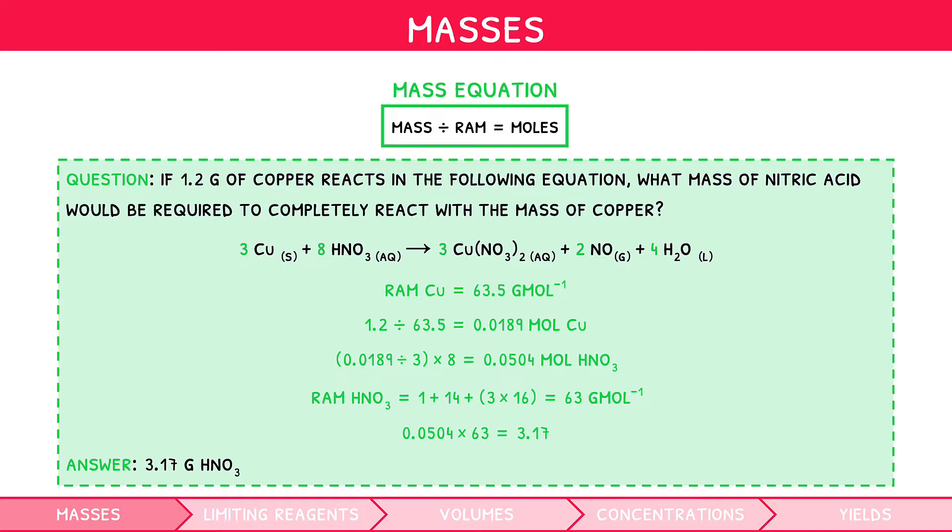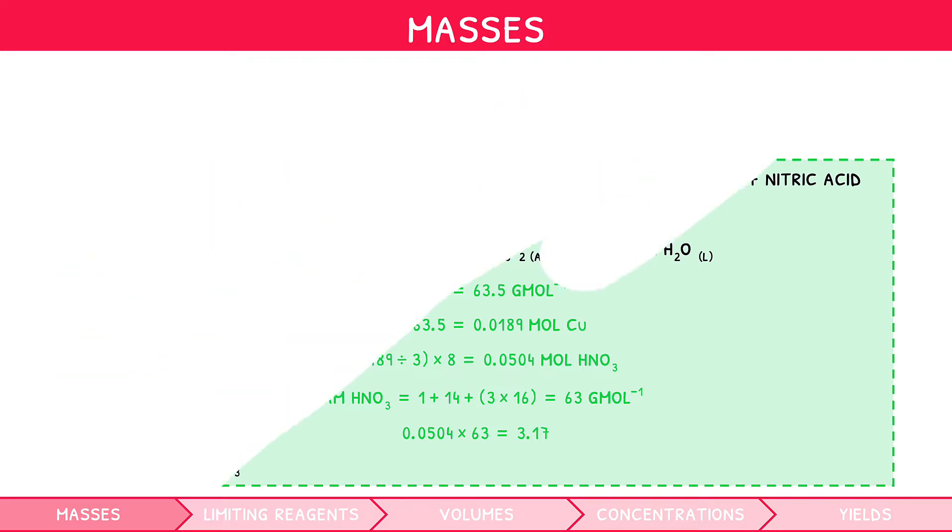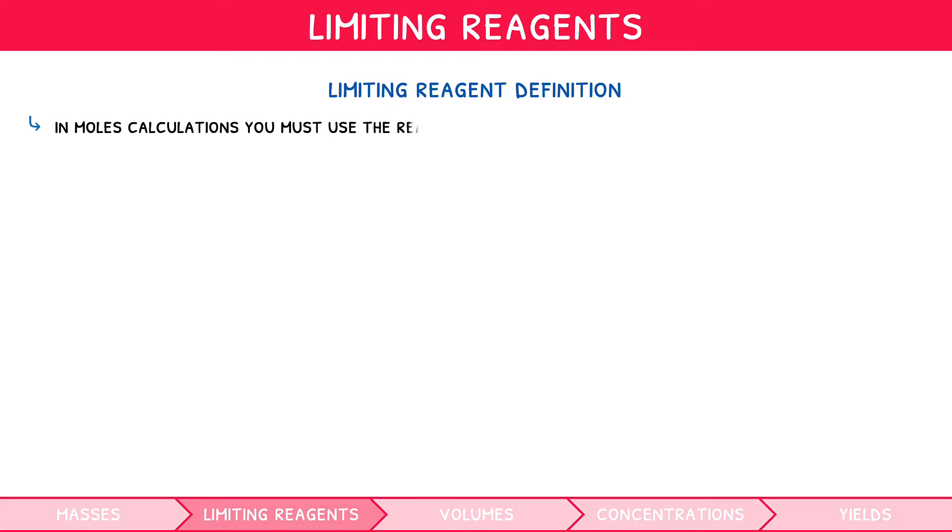Finding the number of moles and masses of both reactants and products according to chemical equations is a core skill in the IB chemistry syllabus. You should definitely practice this. But what happens when you are given arbitrary masses of more than one reagent? In this situation, it is highly likely that one of the reagents will not completely react in the reaction. This is important, as whenever you do moles calculations, you must use the reagent that completely reacts. This is known as the limiting reagent.